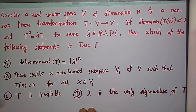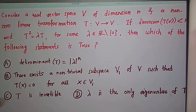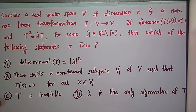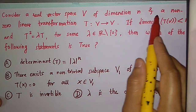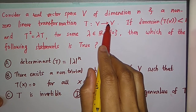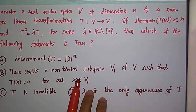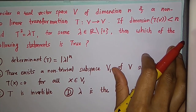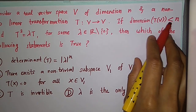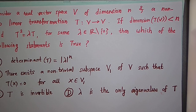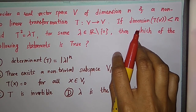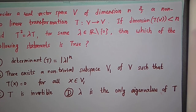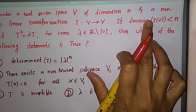In this video, I am going to solve a question from GATE 2016. The question is about true or false. We are given a vector space V with dimension n and a non-zero linear transformation T from V to V. The dimension of T(V) is less than n, which means the dimension of the range of T is less than n, since the range of T is the subspace T(V). Therefore, the dimension of the range of T is the rank of T.